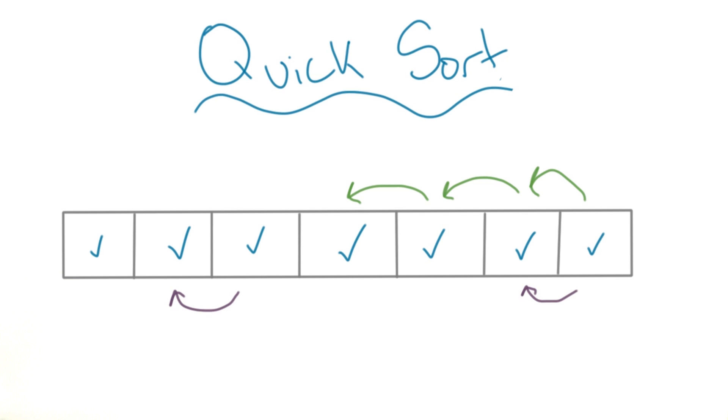Here, because we're cutting the array in half every time, it'll end up looking a lot like merge sort. So again, that's why our efficiency is n log n.